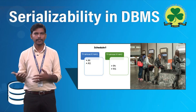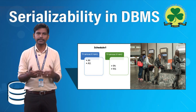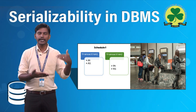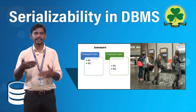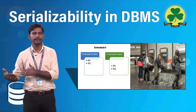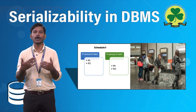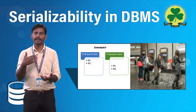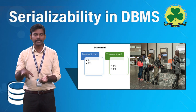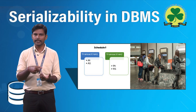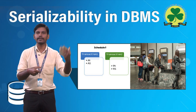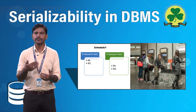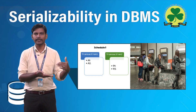The second type is a serializable schedule, which allows more than one transaction to be executed simultaneously, and interleaving is also permitted. So transaction one, transaction two, and transaction three can all execute at overlapping times. However, this can lead to conflicts. When we allow interleaving, the instruction of one transaction may interact with another. We need to check whether this schedule is conflict serializable or not.